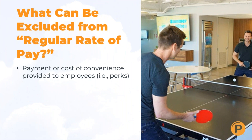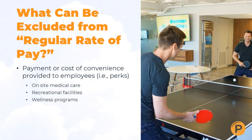You can also exclude the cost of convenience items and perks provided to employees — for example, on-site medical care, on-site flu shots, recreational facilities, wellness programs, employee discounts, and parking — whether that's spaces in your lot or payment for parking. Tuition payments are also not included in the regular rate of pay.